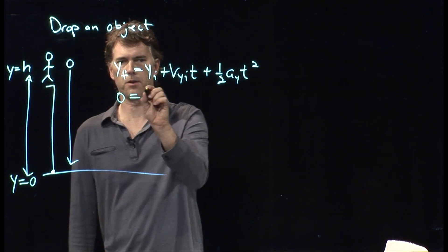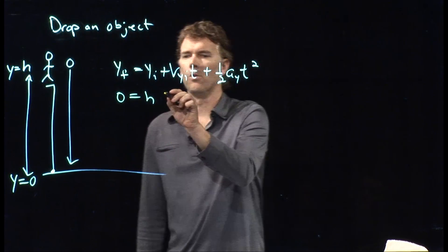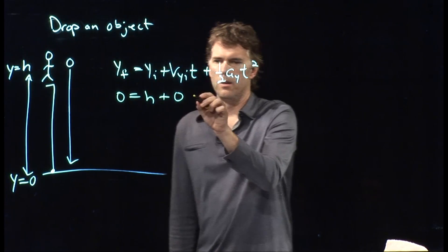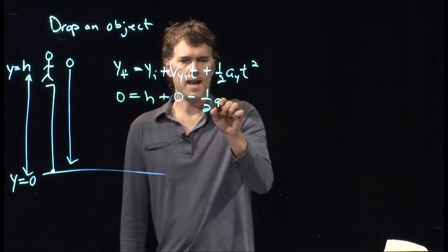We're going to end up on the ground. We're going to start at height h. We're dropping it from rest, so that is zero. Ay is of course negative g.